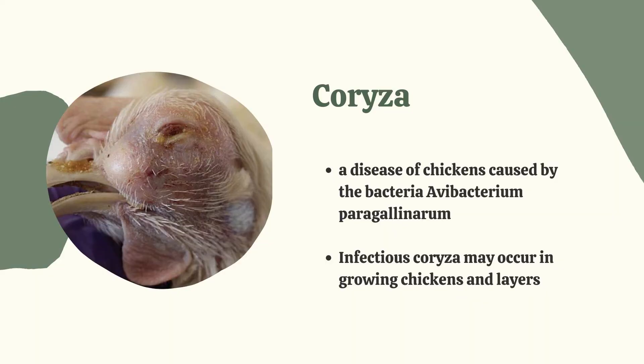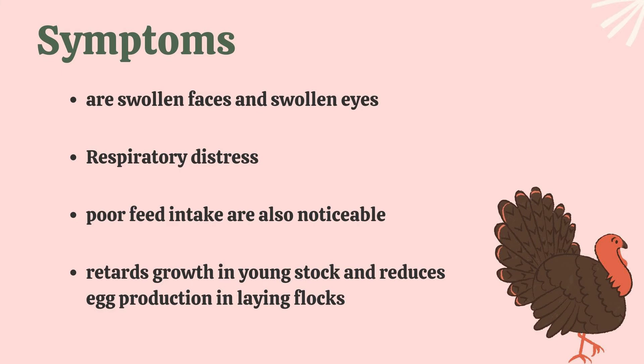Coryza is a disease of chickens caused by the bacteria Avibacterium paragallinarum. Infectious coryza may occur in growing chickens and in layers. Symptoms are swollen faces and swollen eyes. Respiratory distress and poor feed intake are also noticeable. It retards growth in young stock and reduces egg production in laying flocks.